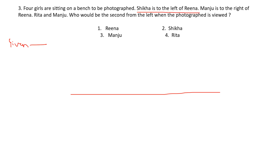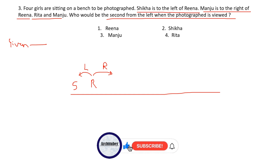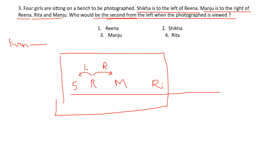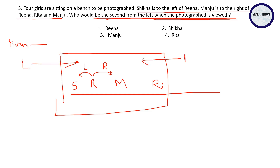Shikha is to the left of Reena, so placing Shikha on the left and Reena next to her. Manju is to the right of Reena, so Manju comes after Reena. Reetha takes the remaining spot. Looking at the arrangement from left to right: Shikha, Reena, Manju, Reetha. The second from the left when the photograph is viewed is Reena.